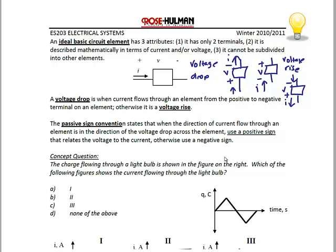The passive sign convention states that when the direction of current flow through an element is in the direction of the voltage drop across the element, use a positive sign that relates the voltage to the current; otherwise, use a negative sign. Since our first two elements were drawn to be voltage drops, we would say that they obey the passive sign convention. Since the second two elements were drawn to be voltage rises, we would say that they do not obey the passive sign convention.